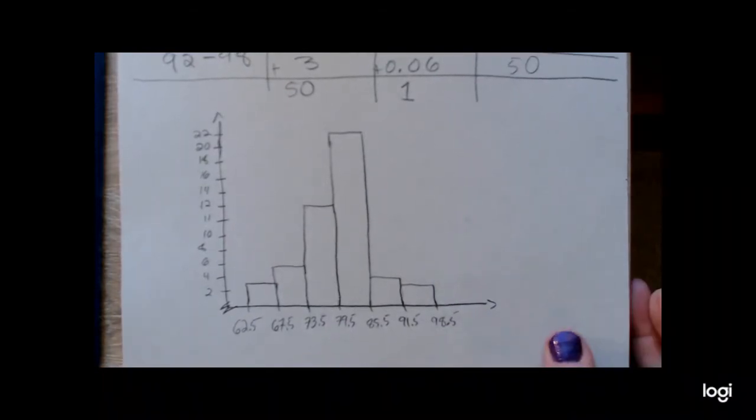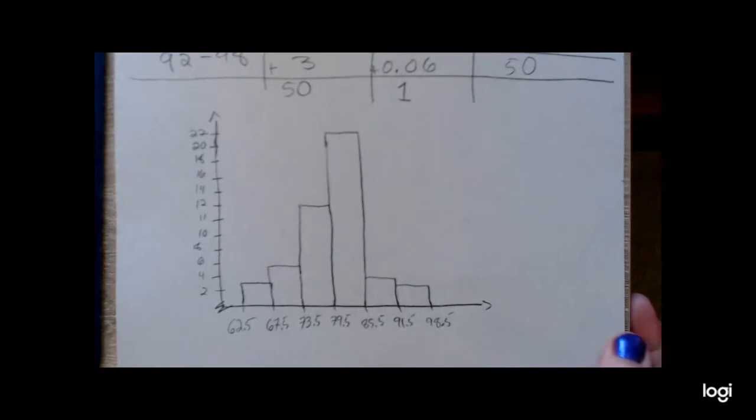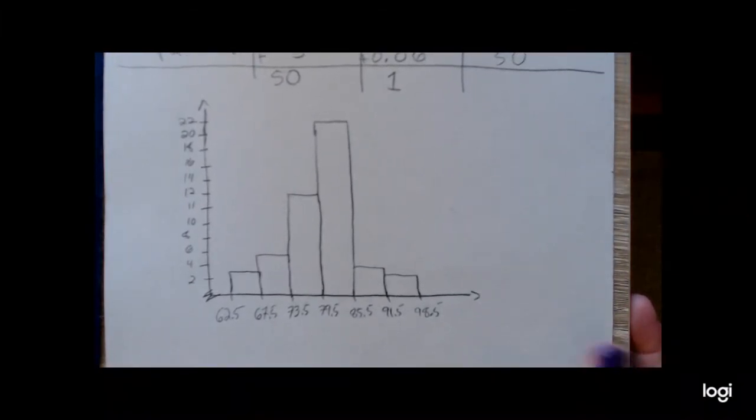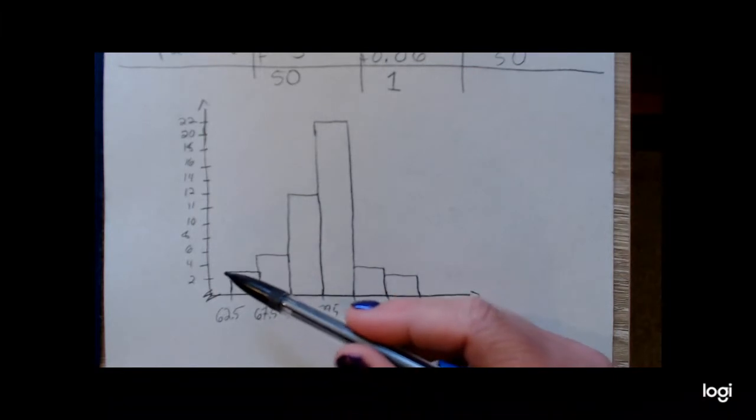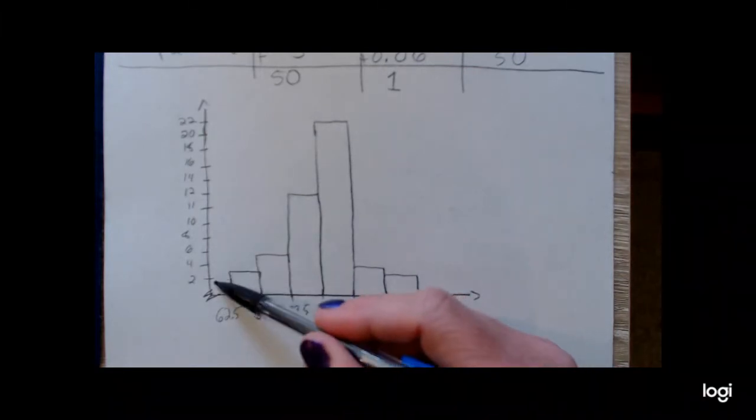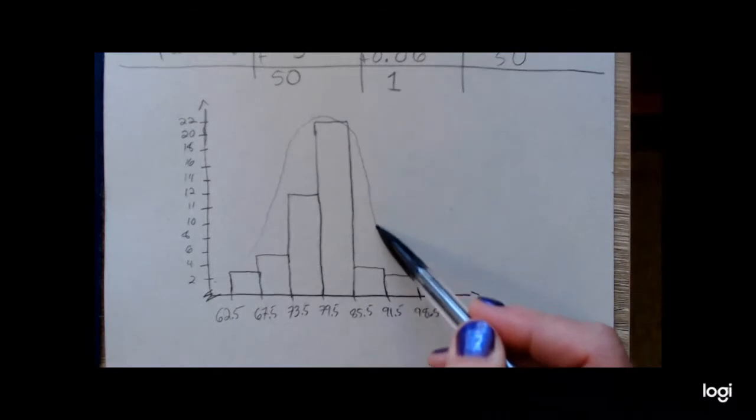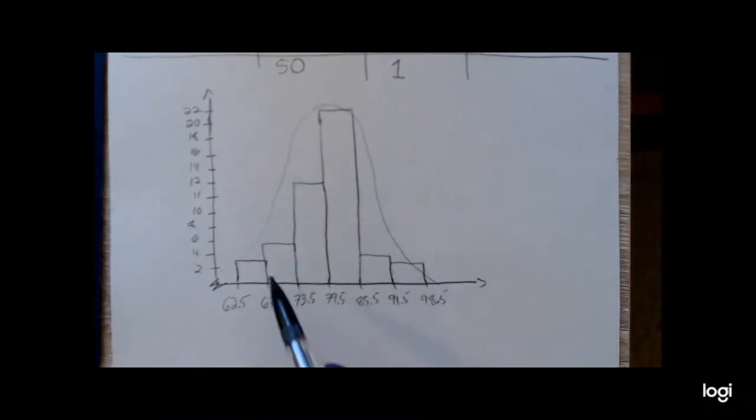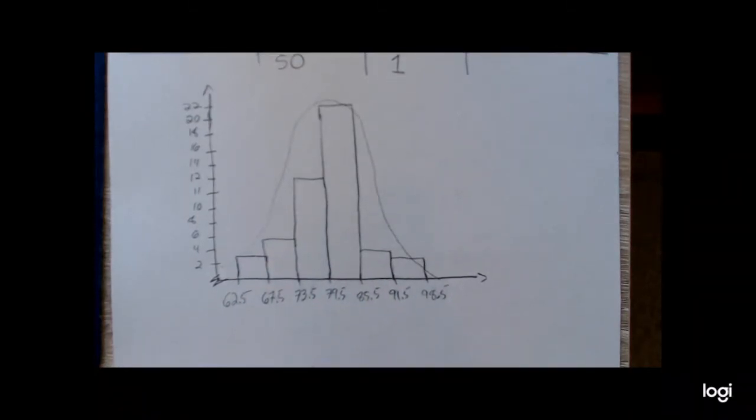All right, so looking at this histogram, it's kind of hard to get a sense of the shape. It does look somewhat symmetric. Okay, if I were to trace the outline of this histogram, okay, I've got small values here, small values here, and it doesn't appear to have a significant amount of skewness.